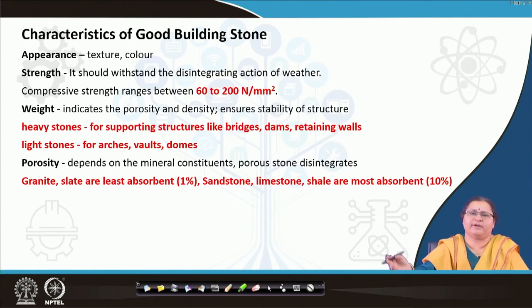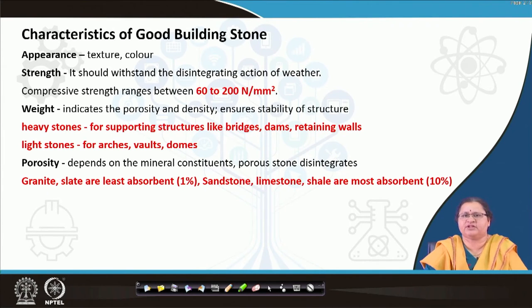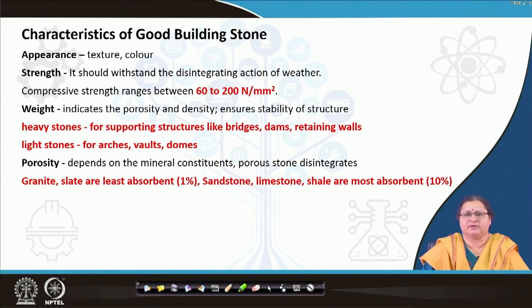Instead of moving straight to types of stones, let us look at the characteristics of good building stone. Stones can be used as a building block similar to brick, so they must have enough strength. The first characteristic is texture and color — you can differentiate stones just by looking at them. With exposure, you understand: this is marble, this is granite, this is black stone, this is sandstone. The texture and color give you the clue.